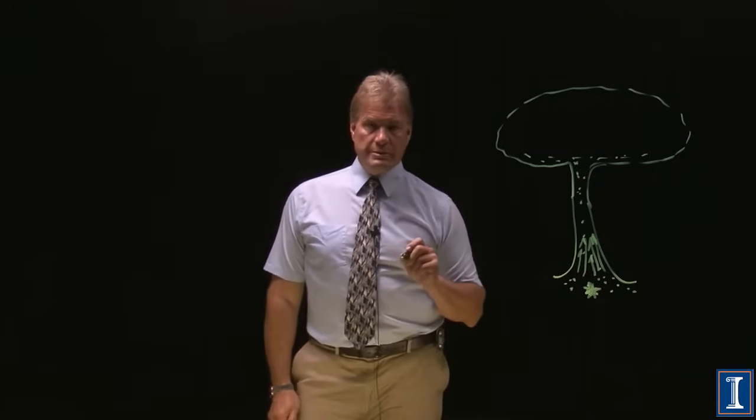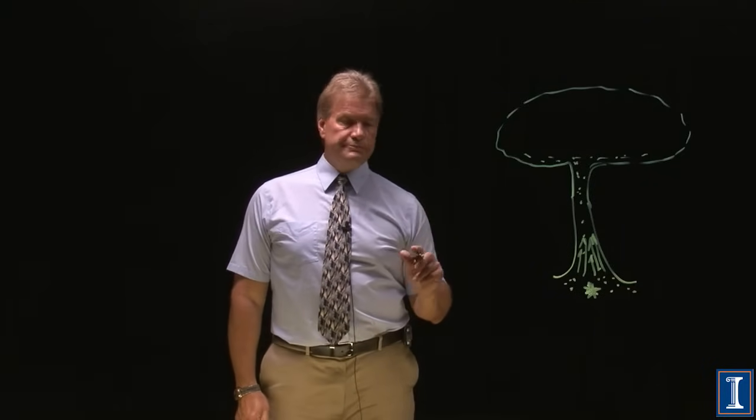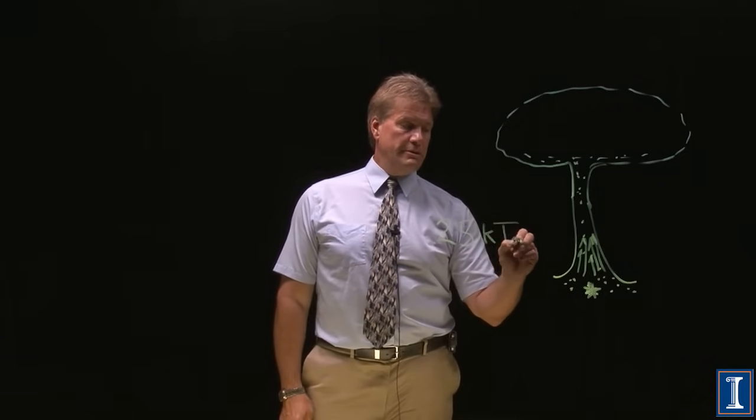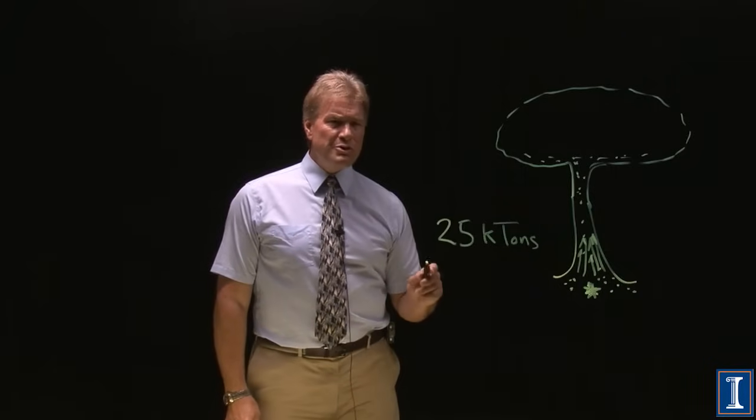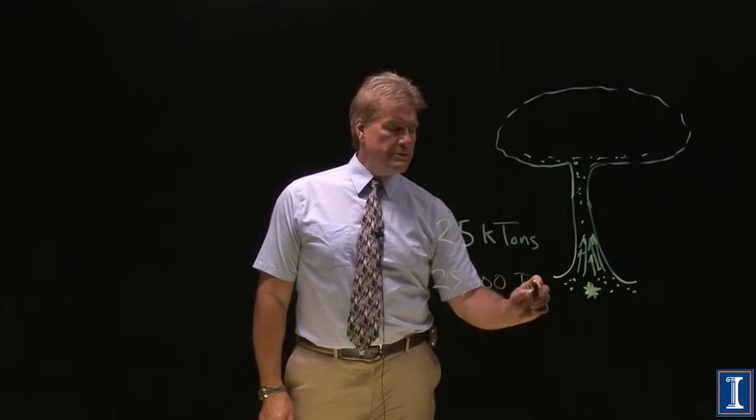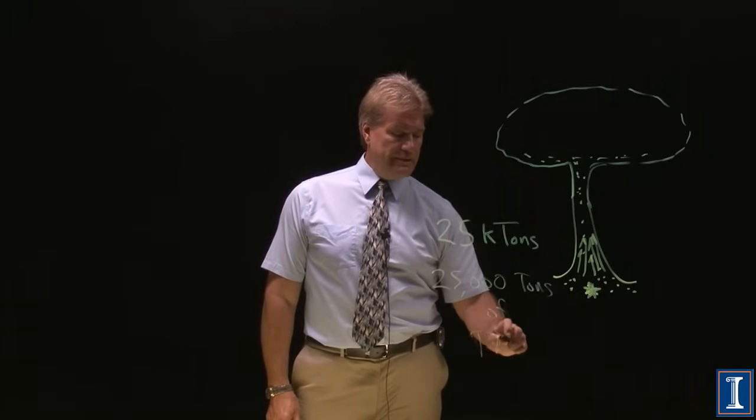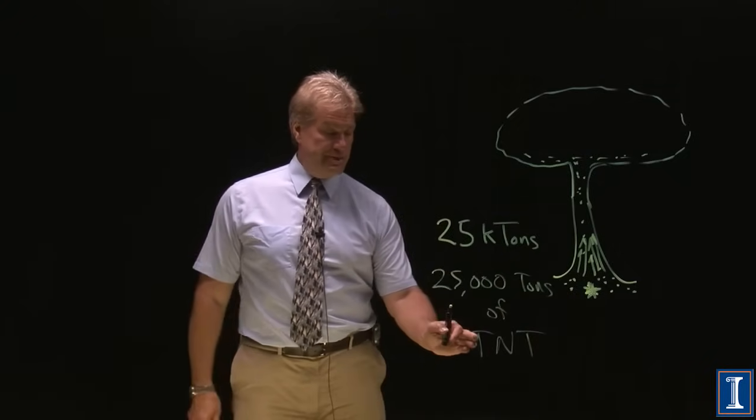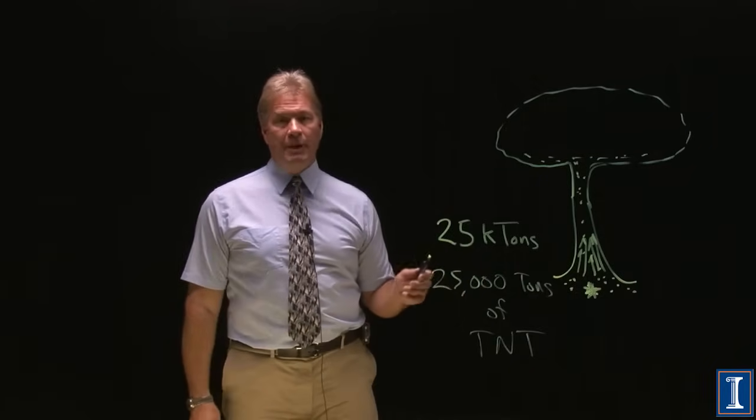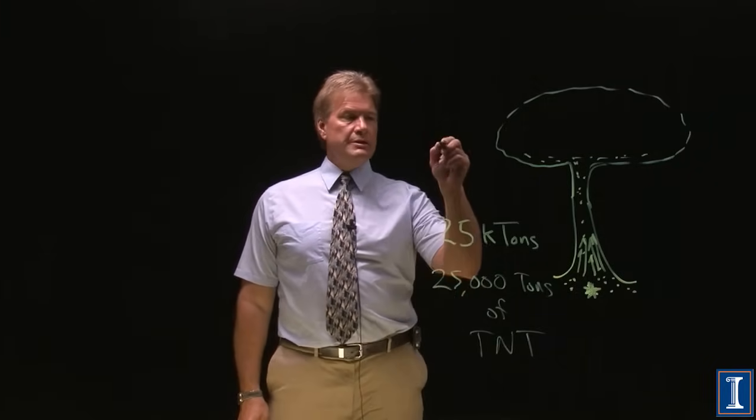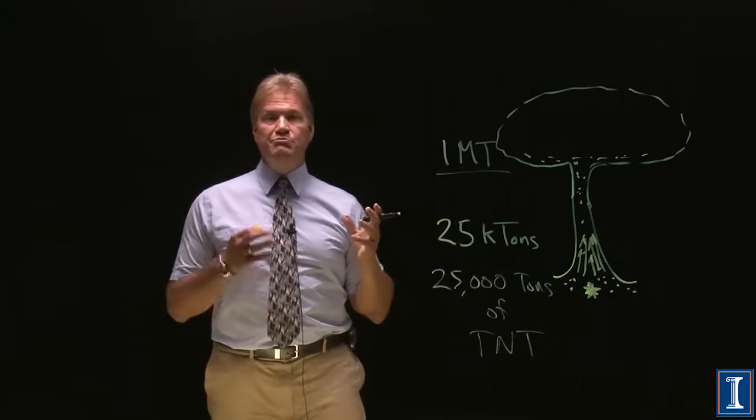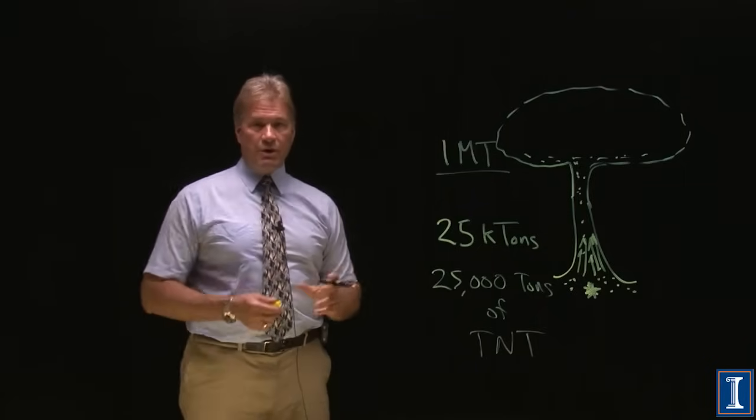The original nuclear weapons were relatively small, maybe 25 kilotons. What that measure means is that's 25 kilotons of TNT, of dynamite, of normal high-energy explosive. 25 kilotons is a small bomb by today's standards. Today, these bombs are often in the megaton range, equivalent to a million tons of TNT going off all at once.